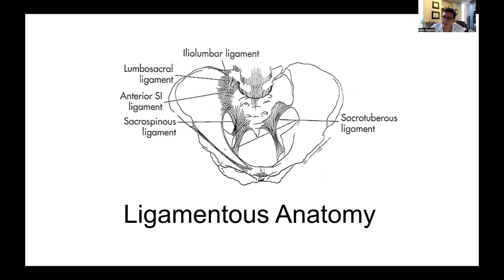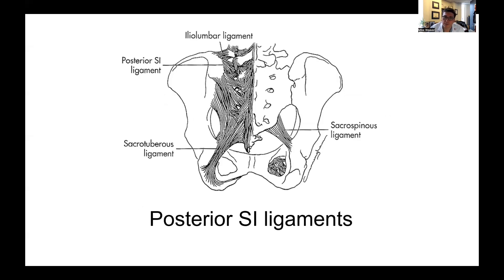In the back, there are really stout ligaments that form the sacroiliac complex. There's the anterior SI ligament that's a little bit weaker, and then posteriorly some very stout ligaments. The posterior sacroiliac ligamentous complex and the posterior portion of the sacroiliac joints themselves really form the keystone to the pelvis. Focusing your understanding on the disruption of the posterior pelvic ring and any disruption to these ligaments is really important.